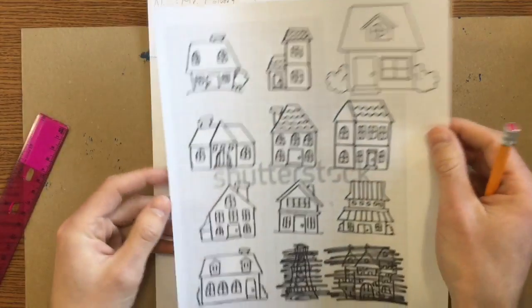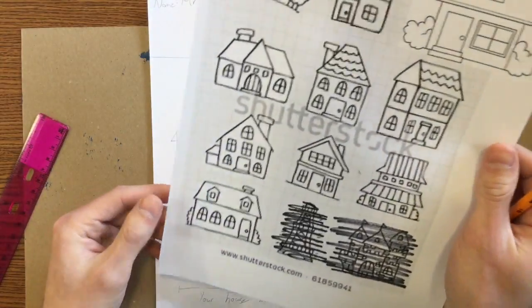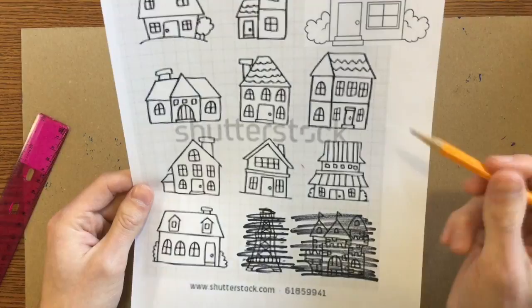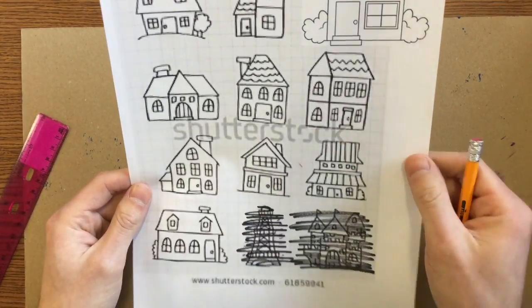You're welcome to do one right off the worksheet. Or you can kind of mix and match some parts of your houses too if you would like. Like if you like the door to one of these and you like a roof to another, you're welcome to do that as well.